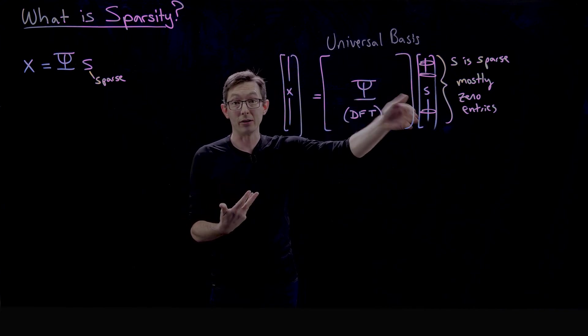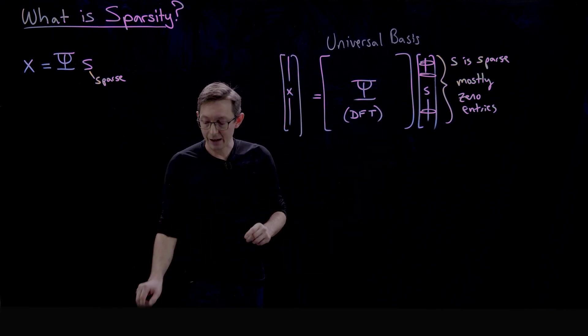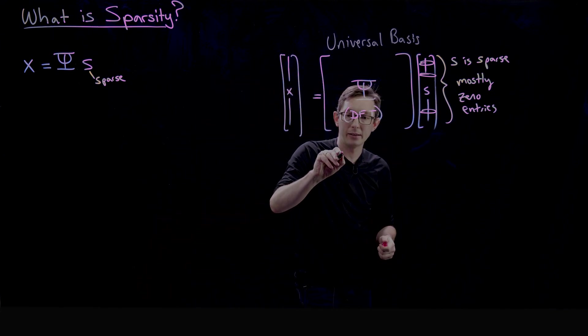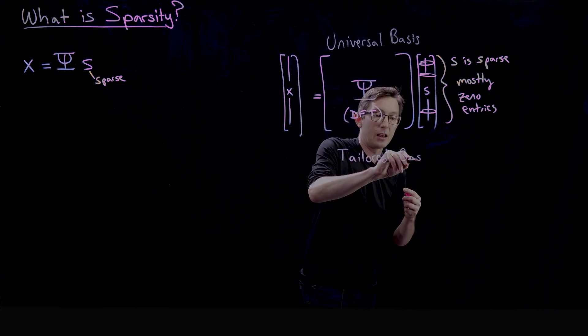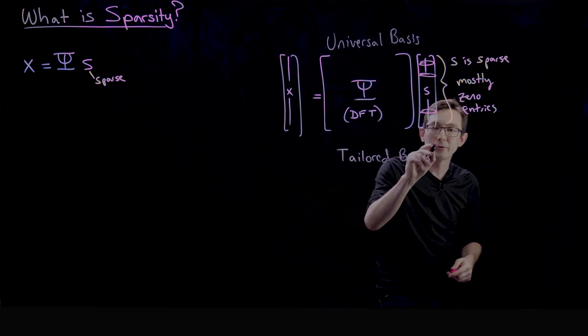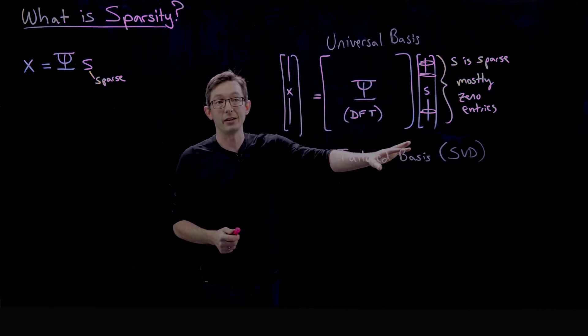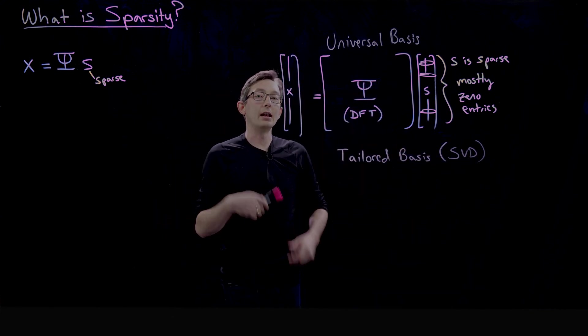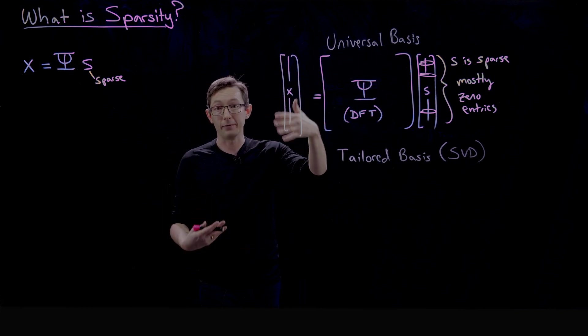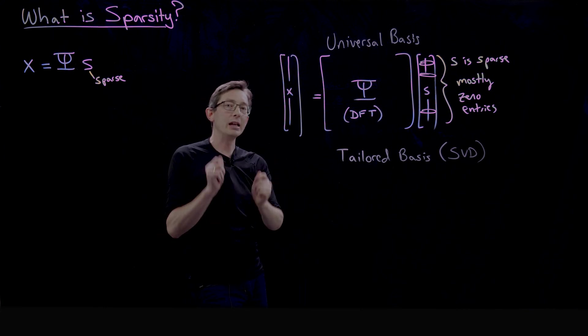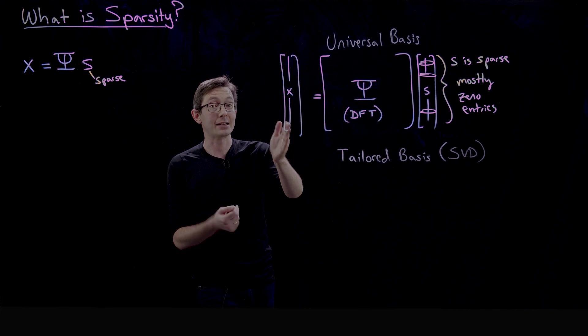Now you can also have a tailored basis, and we're gonna talk about this also—in fact we already have talked about this. A tailored basis could be for example from the SVD—remember the singular value decomposition from chapter one. There's a whole lecture series on the SVD where instead of having X be some generic signal like a dog, a cat, a coffee cup, a human face, if we know that what we're getting is an image of a human face, we absolutely know that X is a human face.